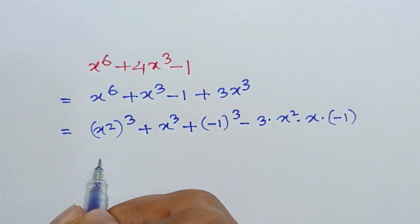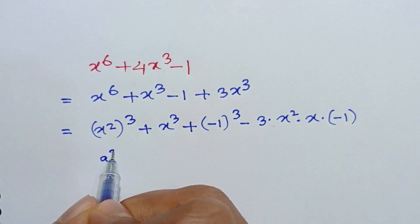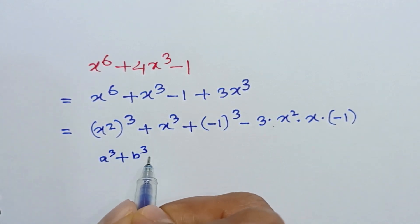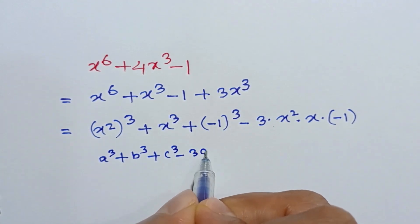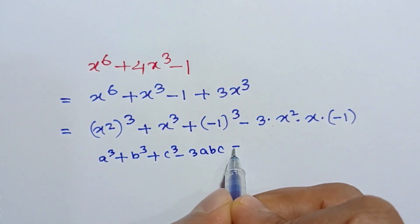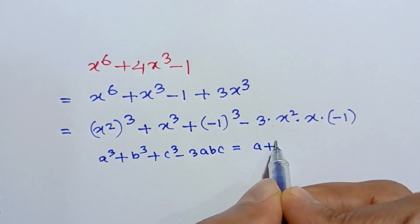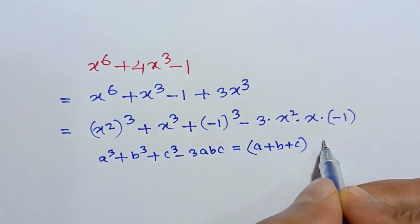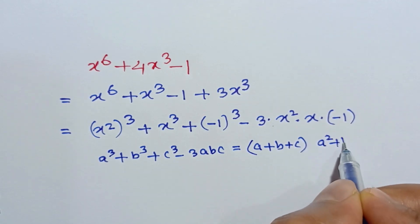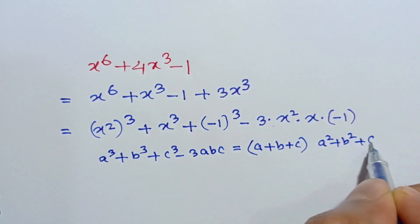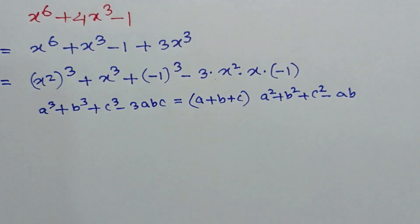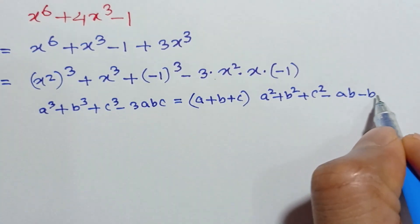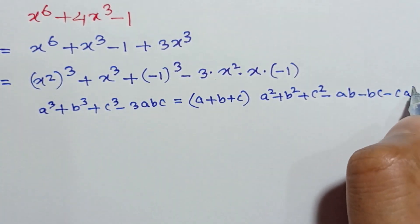Now, we have the formula: a cubed plus b cubed plus c cubed minus 3abc is equal to a plus b plus c times a squared plus b squared plus c squared minus ab minus bc minus ca.